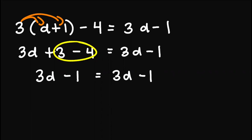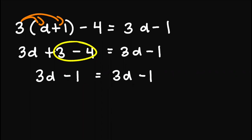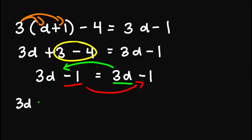Now what do we have here? Observe that the left side simplifies to 3d minus 1, which is equal to the right side 3d minus 1. We can actually stop here, but if we continue the process, we move 3d to the left and negative 1 to the right. We obtain 3d minus 3d equals negative 1 plus 1. Simplifying, we'll have 0 equals 0.